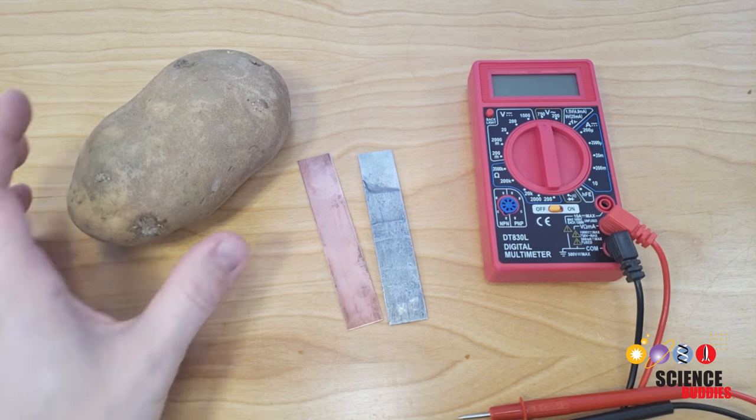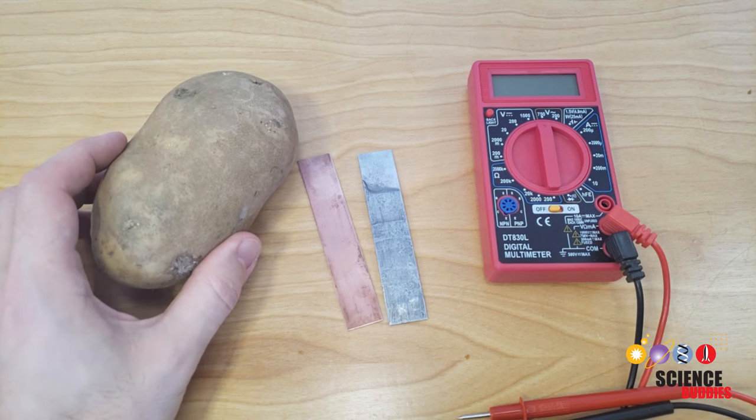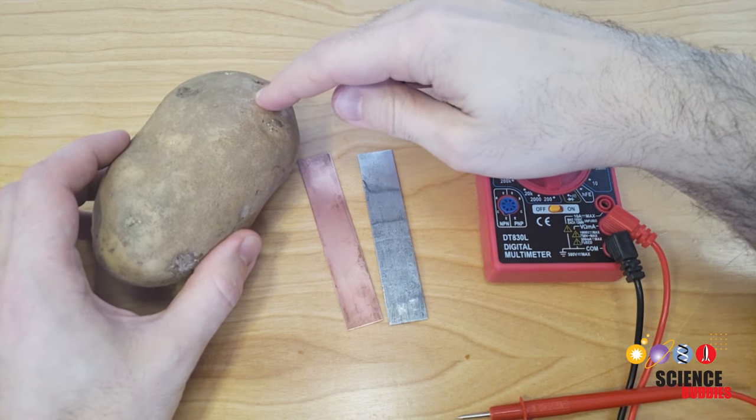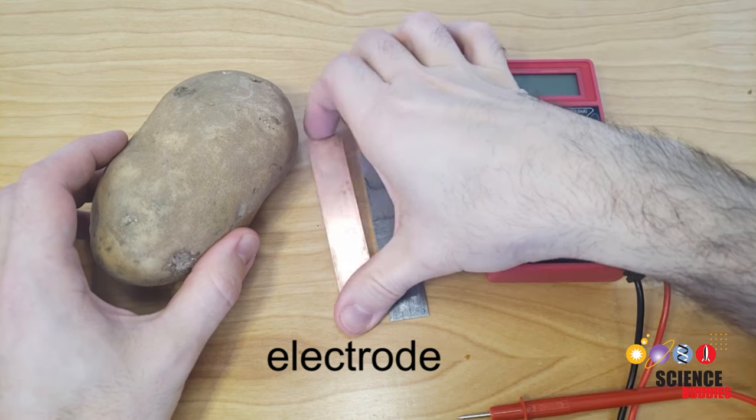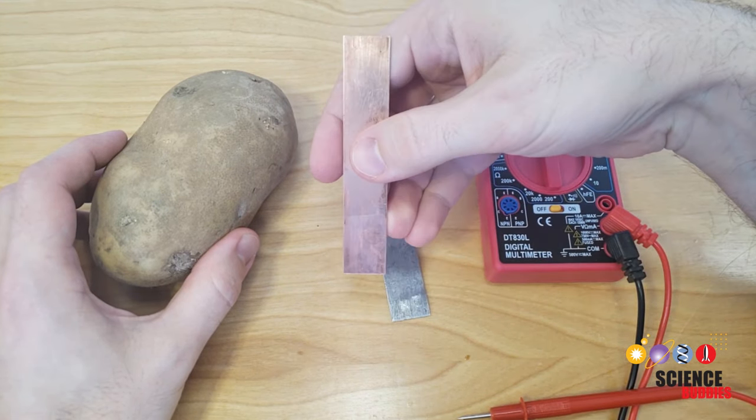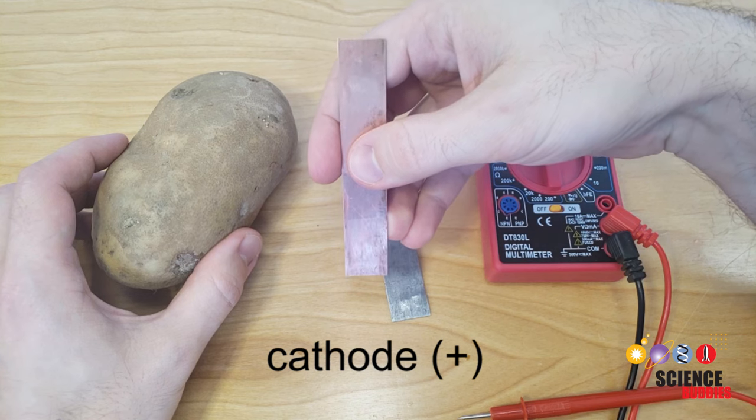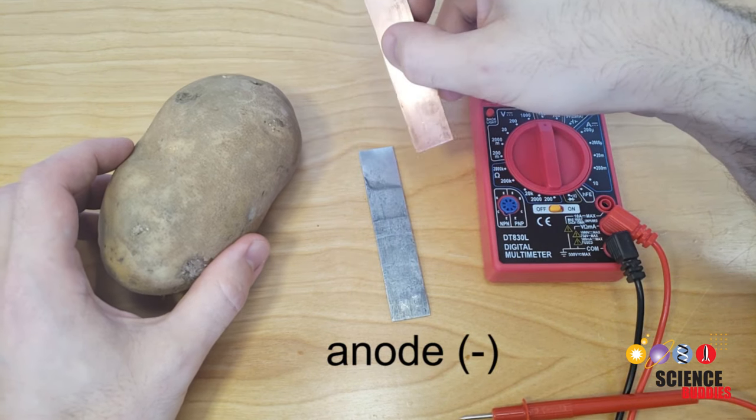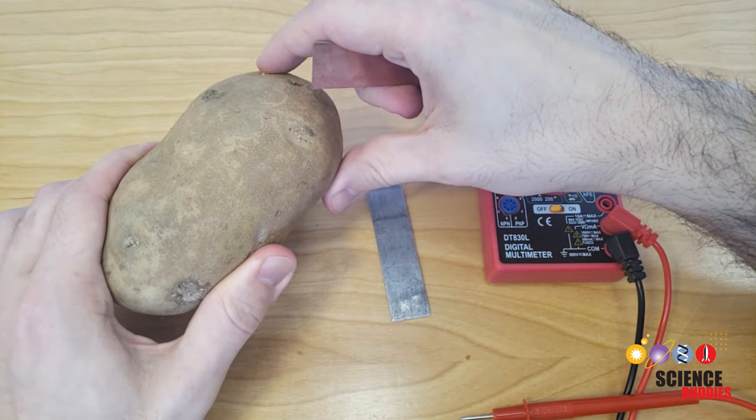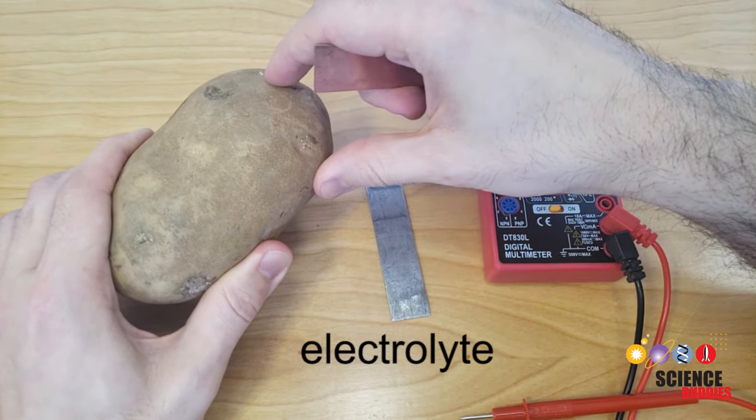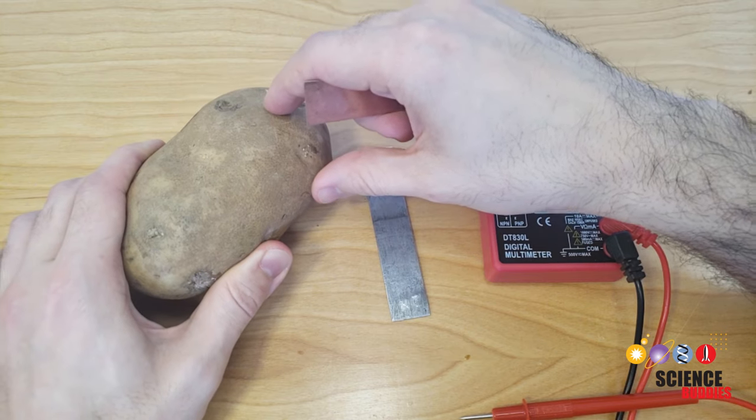So to get started, we are going to build a single cell battery with one potato, one copper electrode, and one zinc electrode. The copper electrode is going to be the cathode or positive side of our battery, and the zinc electrode is going to be the anode or negative side of our battery. The potato itself is going to act as the electrolyte, which allows charge to flow between the electrodes.